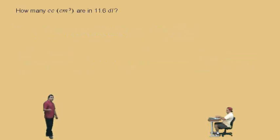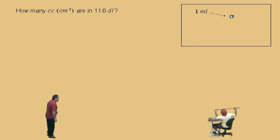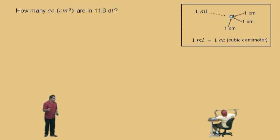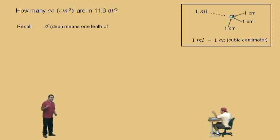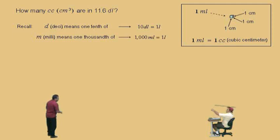Let's go on. How many cc's — cc stands for cubic centimeters, or centimeters cubed — are in 11.6 deciliters? One milliliter is really small, like a little cube. A milliliter is actually 1 centimeter cubed, or 1 cubic centimeter. So 1 milliliter is sometimes referred to as 1 cc, or 1 cc means 1 milliliter. We also need to recall that deci means a tenth of, and there are 10 deciliters in 1 liter. Also, milli means one thousandth of, which means 1,000 milliliters is in 1 liter.